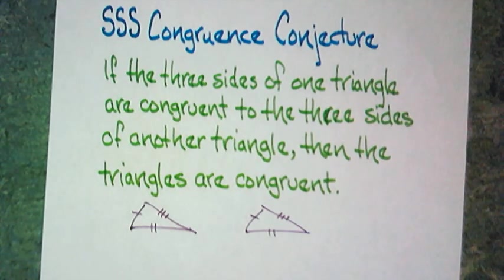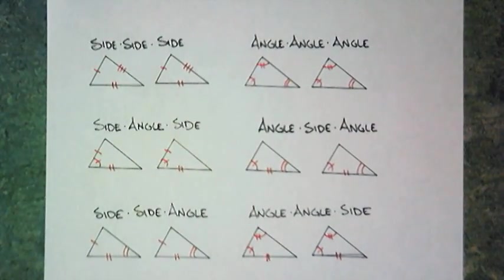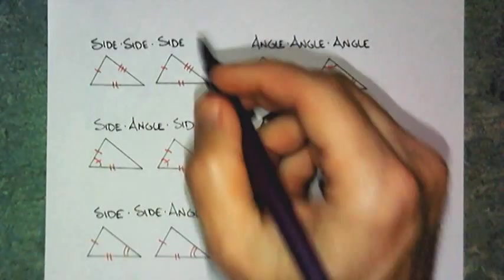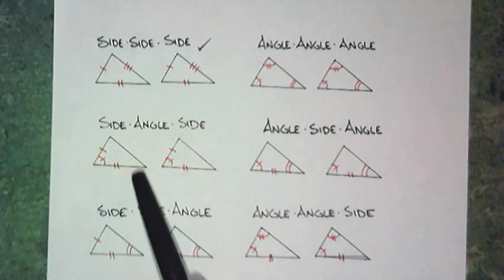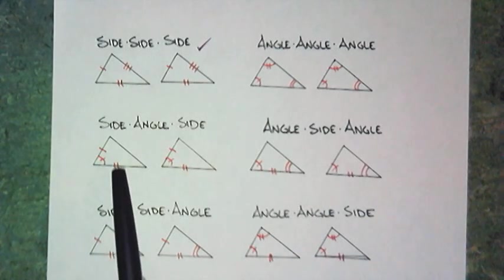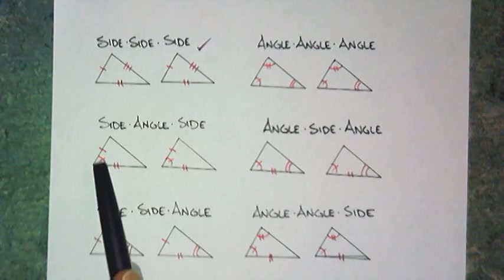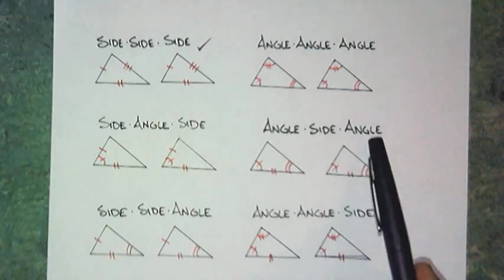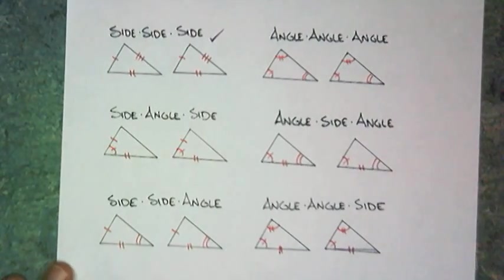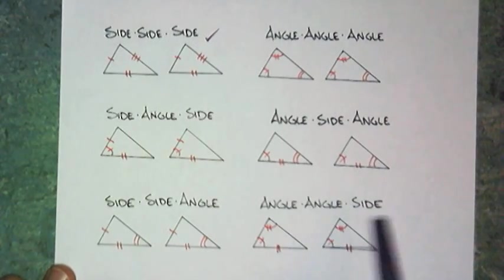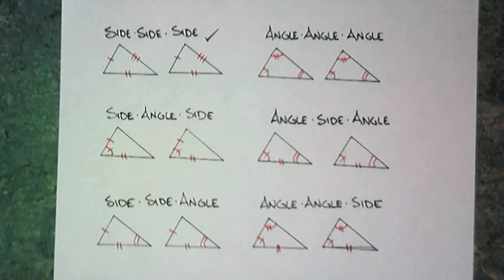What other shortcuts could I use besides side-side-side? We could mix up angles and sides, and here are all the iterations of the mixtures: side-side-side, angle-angle-angle, side-angle-side, angle-side-angle, side-side-angle, and angle-angle-side. All of these is what we're going to explore today.